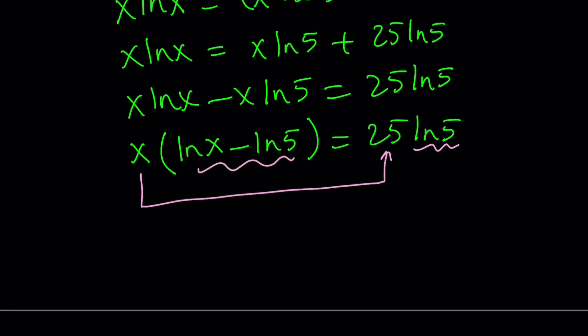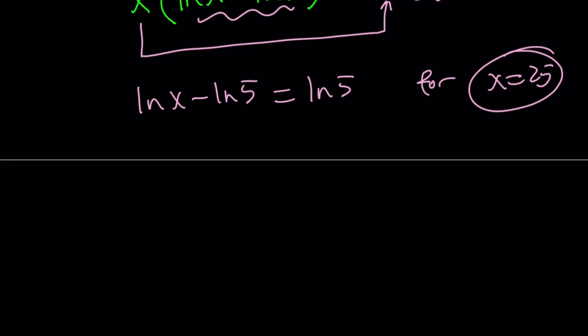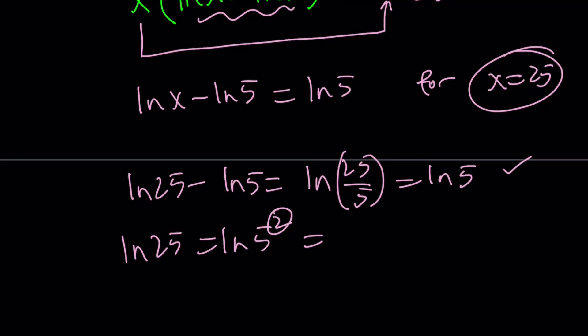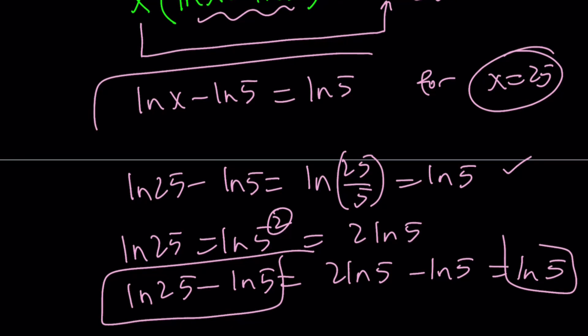Think about it for a minute. Is it true that ln x minus ln 5 equals ln 5 for x equals 25? That is the question. To be or not to be? And it's true. Why? Because if you think about it, ln 25 minus ln 5 can be written as ln 25 over 5 from properties of logs and that's ln 5. So, it checks. Or you can look at it differently. ln 25 can be written as ln 5 squared which is 2 ln 5. So, ln 25 minus ln 5 is 2 ln 5 minus ln 5 and that is equal to ln 5. Therefore, this equation is satisfied by 25 and everything checks.